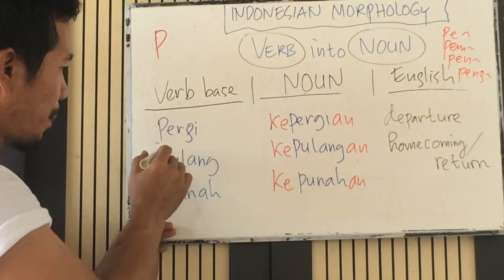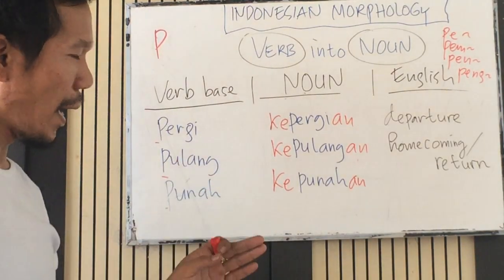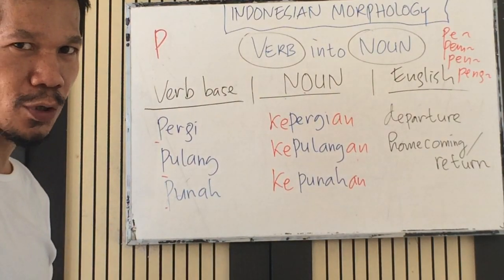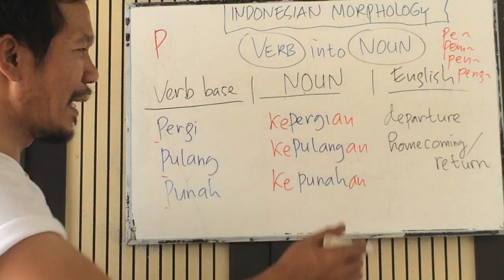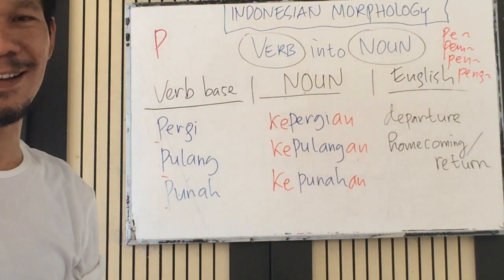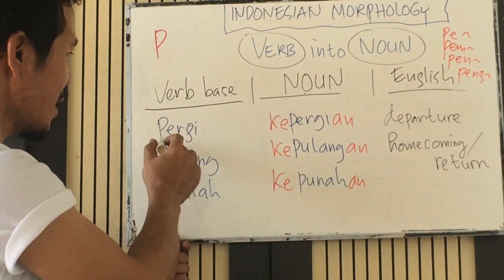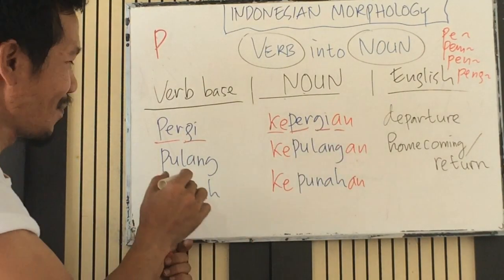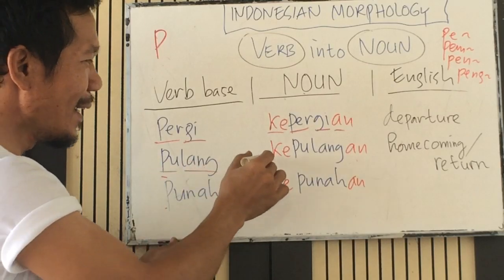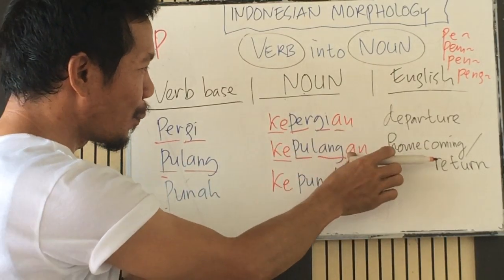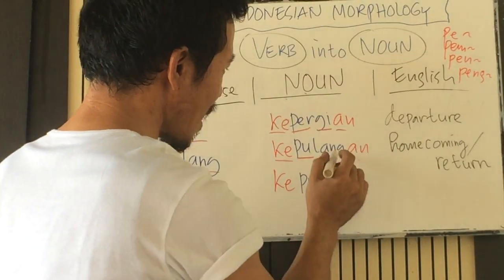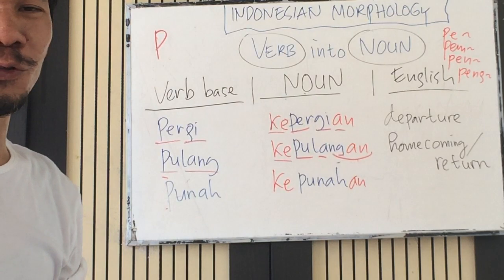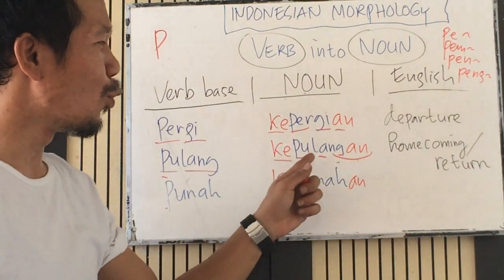For a verb base starting with the letter P that we want to make into a noun, we use the prefix 'ke-' and the suffix '-an'. Let's practice: pergi → kepergian, pulang → kepulangan.